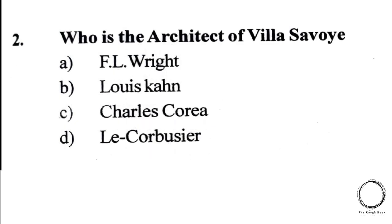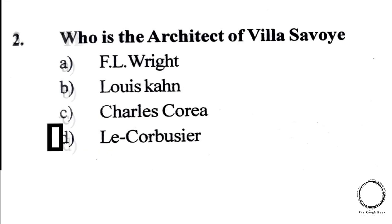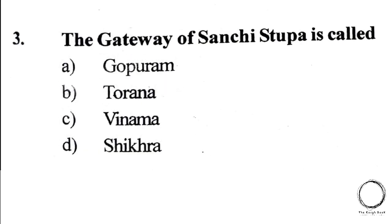Moving on to the next question: Who is the architect of Villa Savoye? The options are A) F.L. Wright, B) Louis Kahn, C) Charles Correa, and D) Le Corbusier. The answer is D) Le Corbusier.